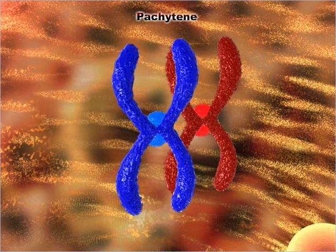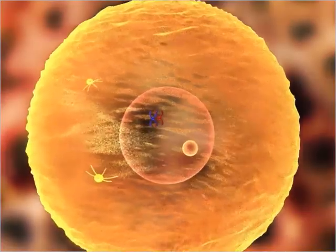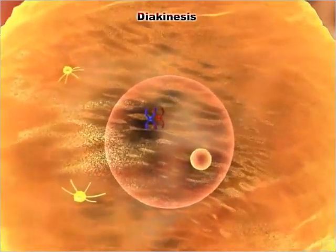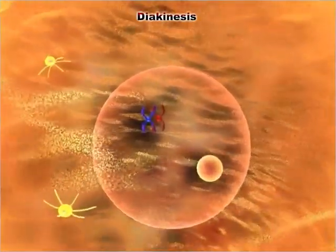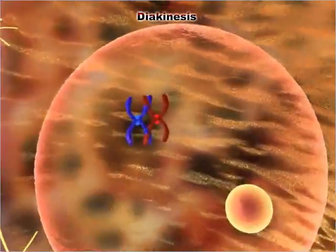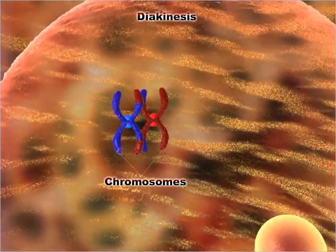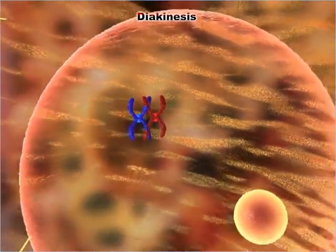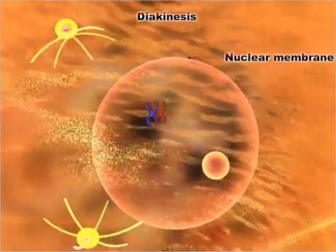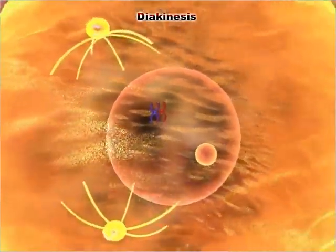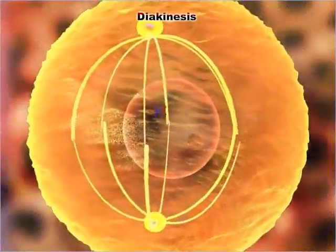As crossing over completes, it marks the end of the pachytene phase. Diplotene is followed by diakinesis, which is also the last stage of prophase one. During diakinesis, the chromosomes are fully condensed, the nucleolus and the nuclear membrane dissolve, and the mitotic spindle begins to assemble.